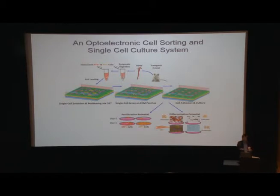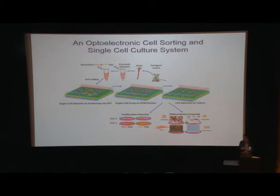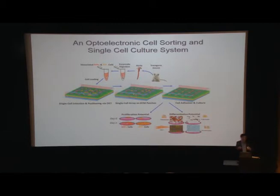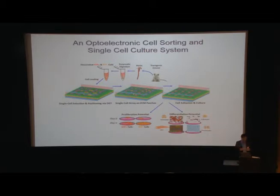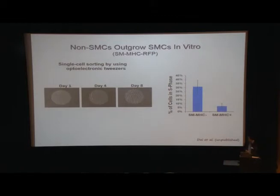We performed single-cell analysis in vitro using a lineage tracing model with myosin-heavy chain as a marker to isolate smooth muscle cells from transgenic mice. We digest the vessel and use optoelectronic tweezers to select the myosin-heavy chain positive cells, then seed them onto a surface micropatterned with matrix islands — each island about 500 microns, with non-cell-adhesive areas in between. We then performed single-cell analysis to look at cell proliferation, cell differentiation, single-cell contraction, and single-cell western blotting.